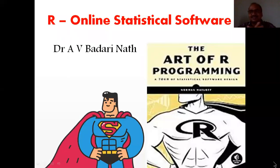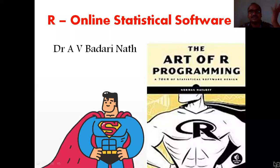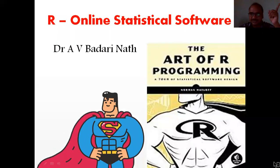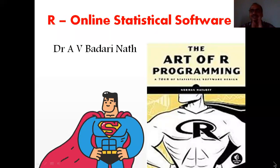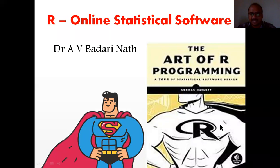Hi students, this is Dr. Badrinath. Today's concept is online statistical software. Just like C and C++ language existed, before that in the world there was the R language. This language was widely used to write statistical programs and perform statistical calculations in the computer. The name of the language is R language, and this is the official symbol of the R language.